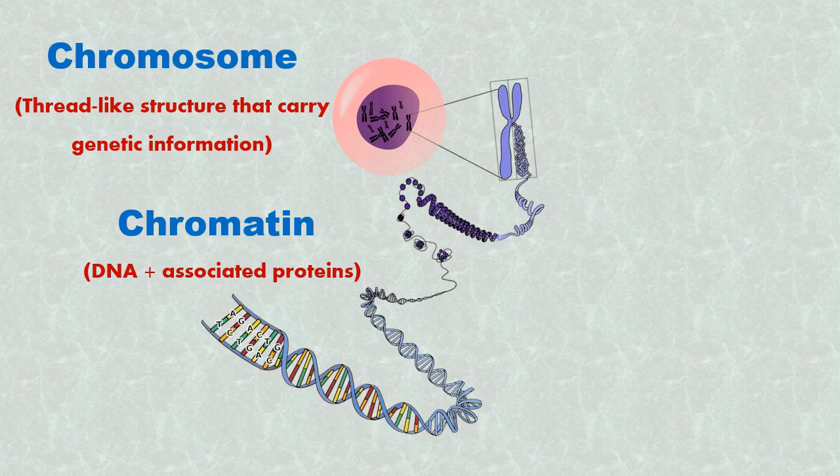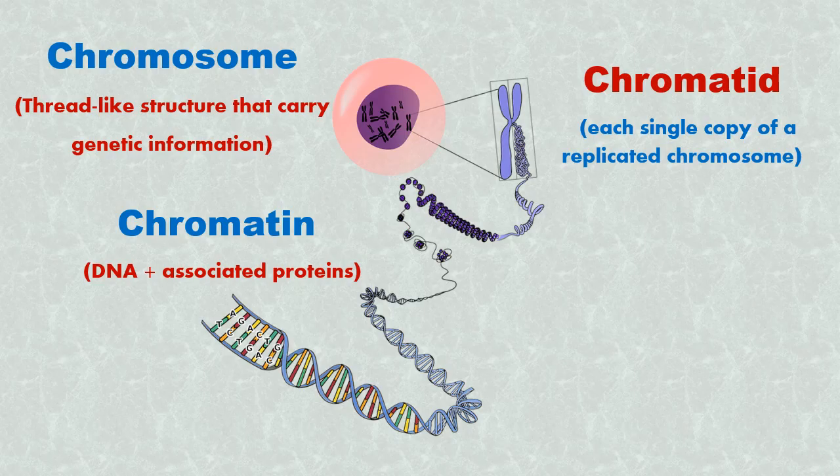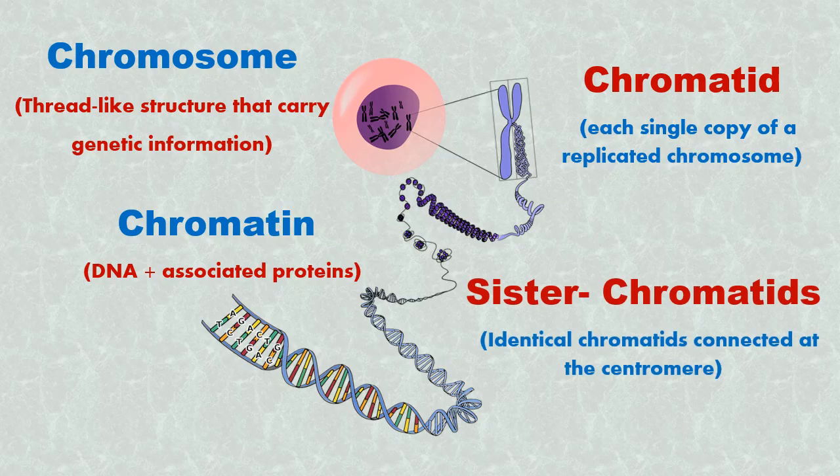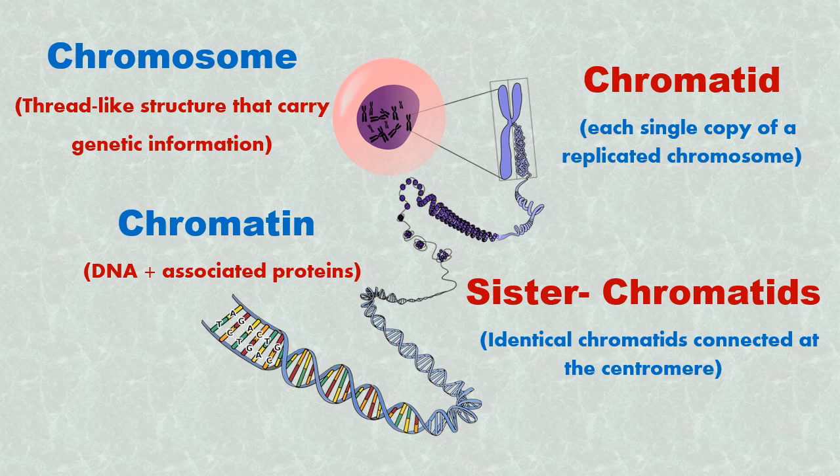Each of the double-stranded DNA copy in a replicated chromosome is called a chromatid. And chromatid copies that remain attached at their centromere are known as sister chromatids.